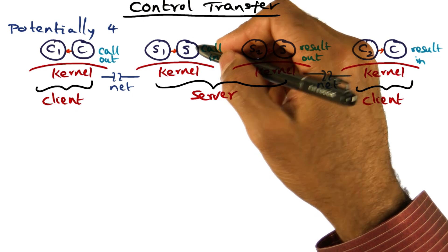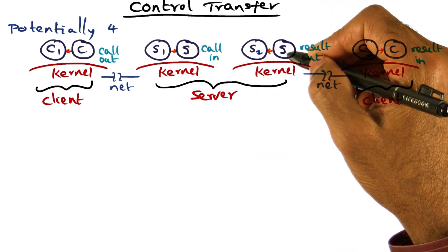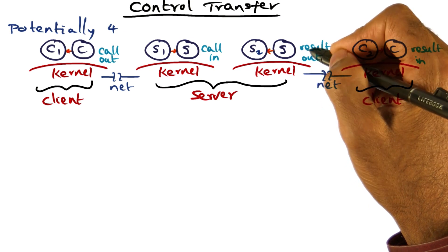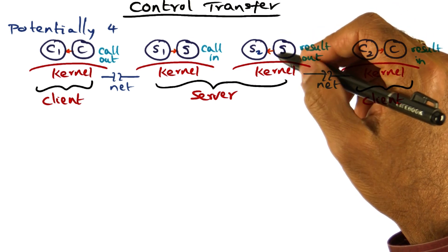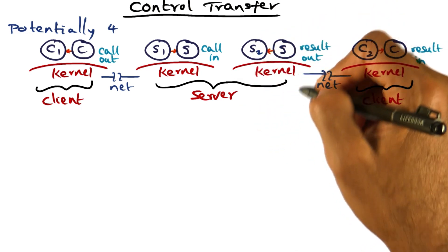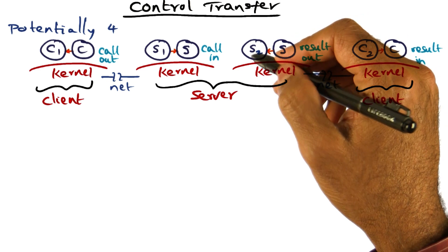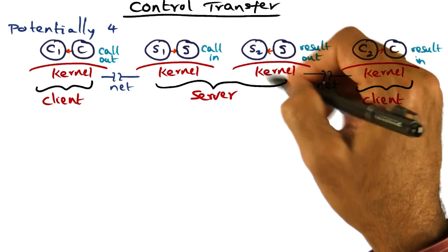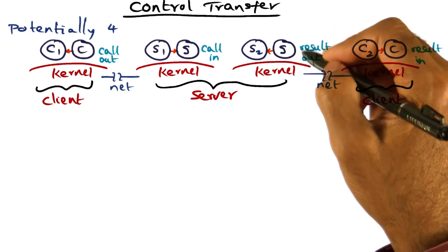Then the server procedure executes, and once the server procedure has completed execution, it is going to send the results out. At that point the work is done for the server, so the server operating system has to switch from S to some other process S2. That is another context switch, because the server is done with what it had to do. That is the third context switch.